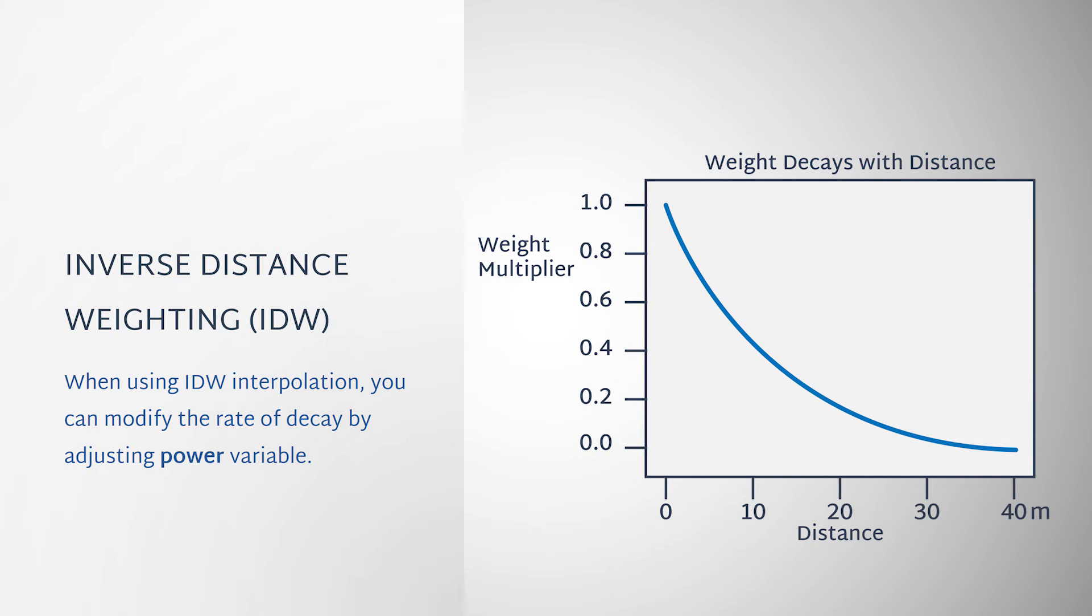When using IDW interpolation, the influence of nearby data points in the search neighborhood decays exponentially with distance. You can modify the rate of decay by adjusting the power variable.